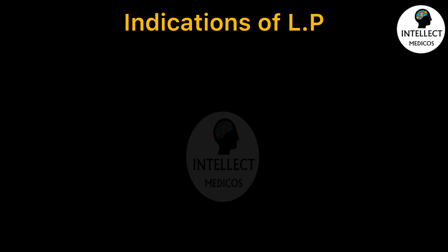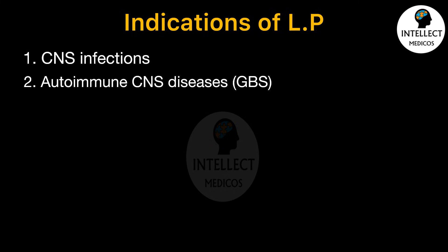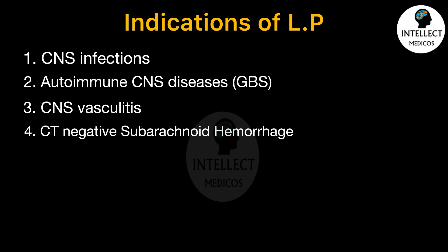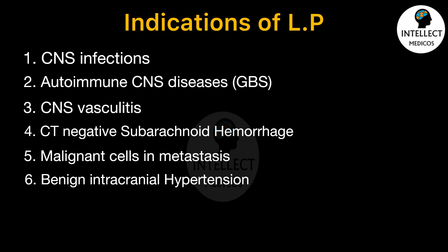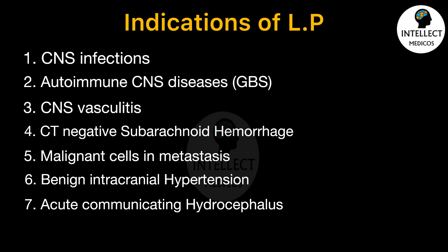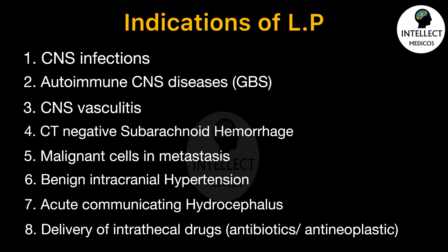Lumbar puncture can be diagnostic in cases of CNS infection, autoimmune CNS diseases like GBS or CNS vasculitis, CT-negative subarachnoid hemorrhage, or checking for malignant cells in cases of metastasis. It can be therapeutic in benign intracranial hypertension or acute communicating hydrocephalus, and also useful for delivery of intrathecal drugs such as antibiotics or antineoplastic drugs.